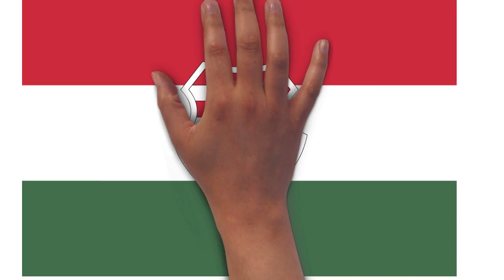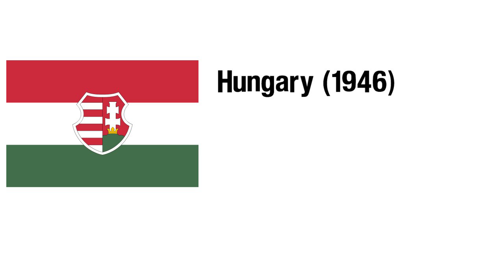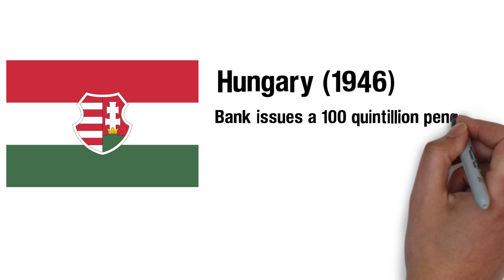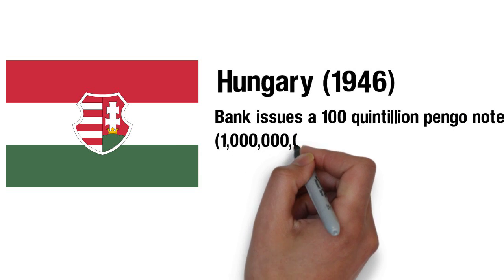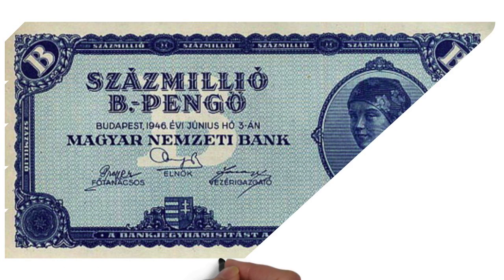Surprising as it may seem, this rate is not the highest inflation rate ever recorded. That honour belongs to Hungary which in 1946 issued a 100 quintillion PENGO note. The Hungarian rate of inflation was so high that prices were effectively doubling every 15 hours.